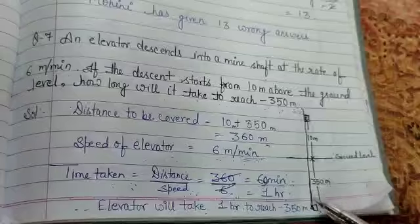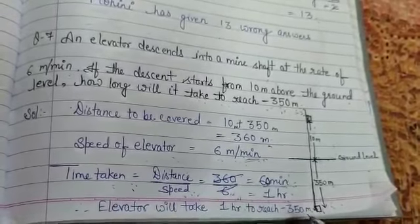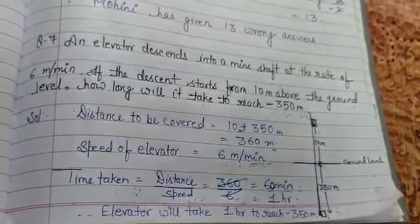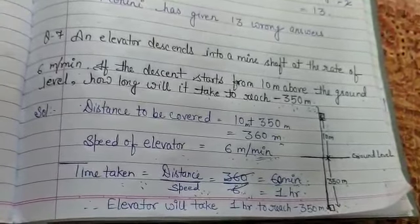Minus sign means below the ground level. So the elevator will take 1 hour to reach minus 350 meters. So here, students, this was the last question of exercise 1.4. Hope you all are getting it. Thank you.